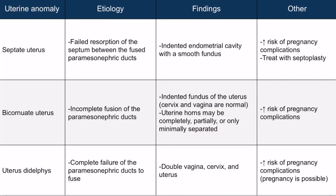These patients will have an indented endometrial cavity with a smooth fundus. All these anomalies carry an increased risk of pregnancy complications, such as ectopic pregnancy and preterm birth. This should make logical sense — if there are problems with the uterus, a fetus will have a more difficult time growing and staying healthy. A septate uterus can be treated with septoplasty to surgically remove the septum.